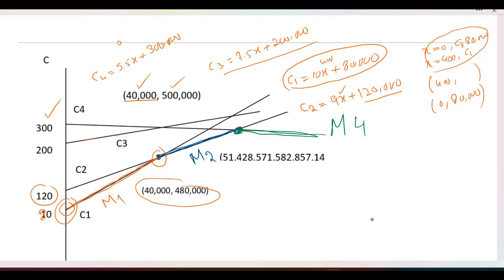C1 from 0 to 40,000 gives the least cost. That means when fewer than 40,000 units are being produced, C1 gives the minimum cost.